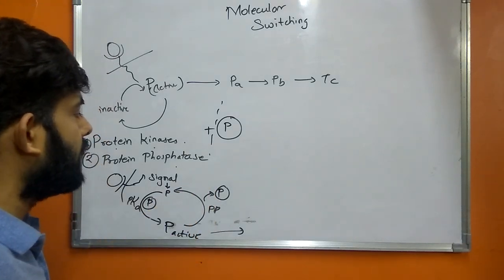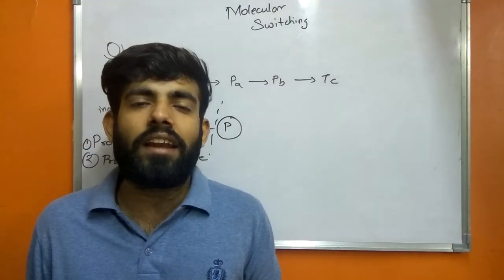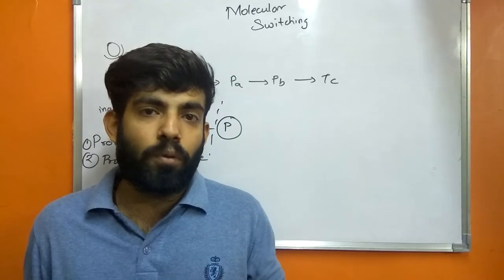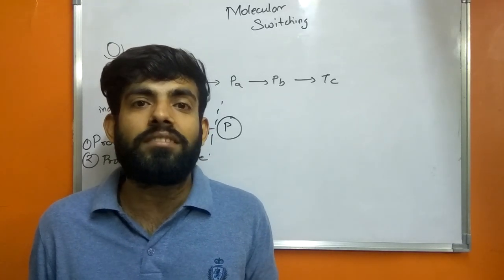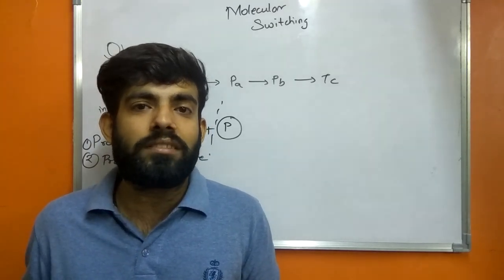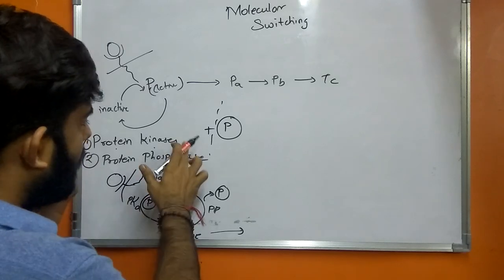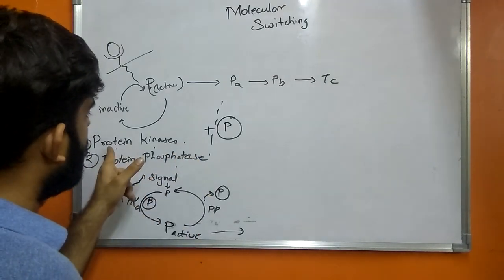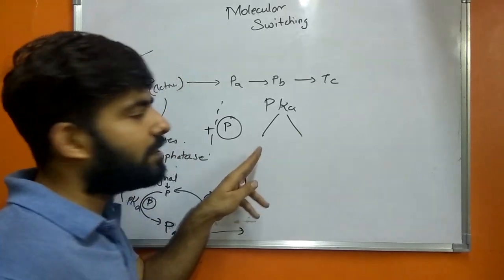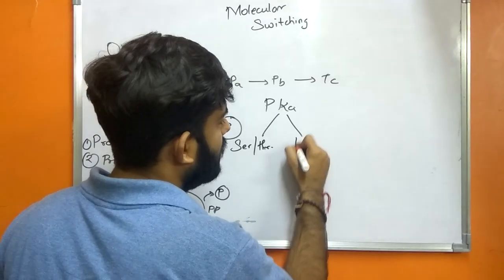Mostly, the proteins that have intracellular signaling function are generally protein kinases. These protein kinases first activate themselves and then activate a set of other protein kinases, which further activates or alters the target protein. The target protein leads to the change in the morphological and chemical form of the cell. Protein kinases are further split into two major categories: the first is serine/threonine kinases and the second is tyrosine kinases.